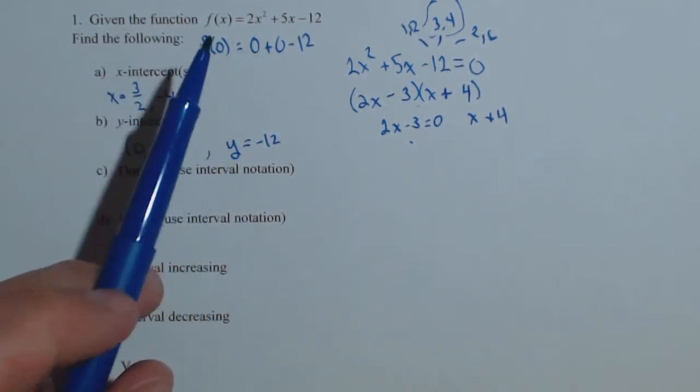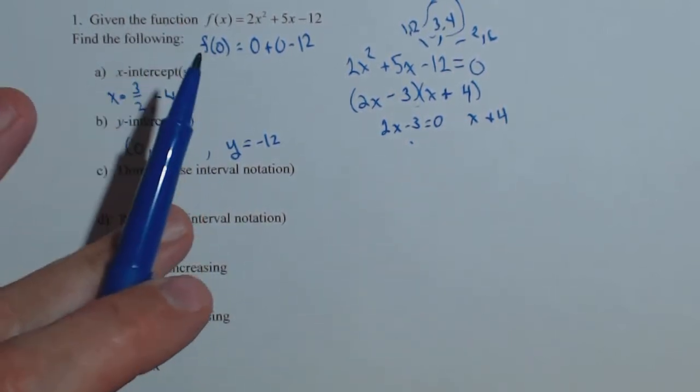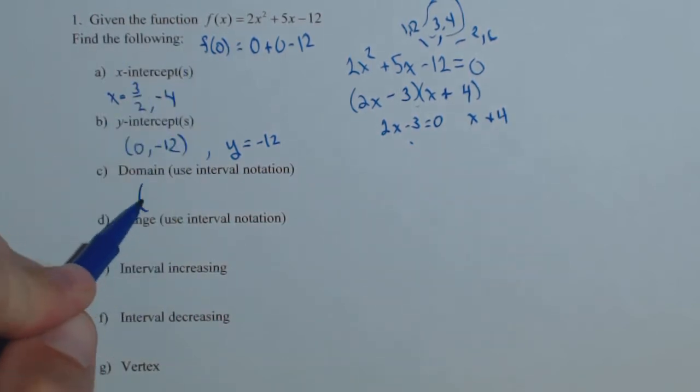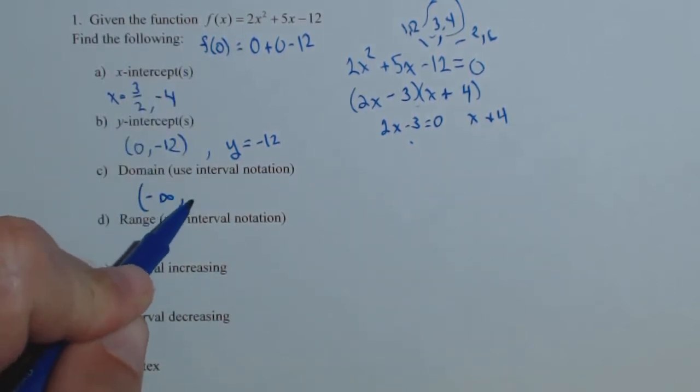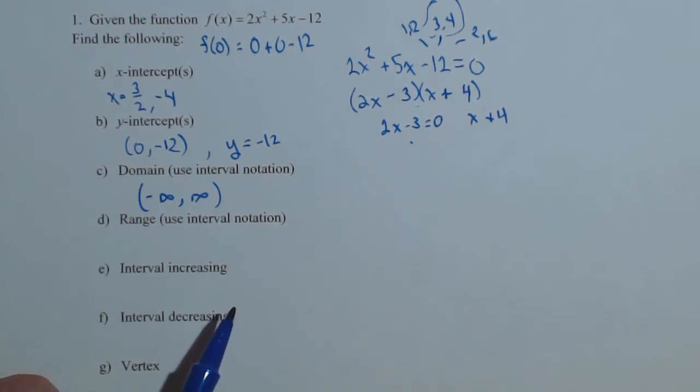So the domain of a quadratic. If we're not in any context, the domain of a quadratic is always going to be all reals, but we want to use interval notation, so we write it as negative infinity to infinity.